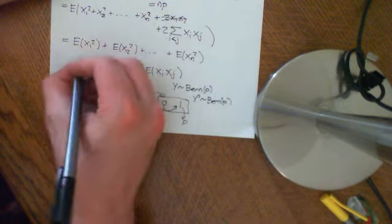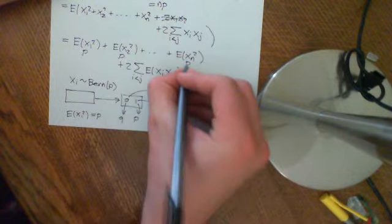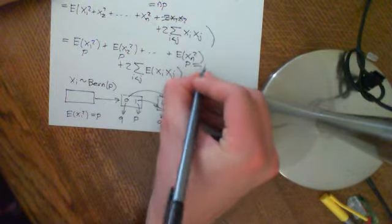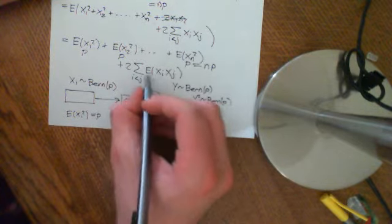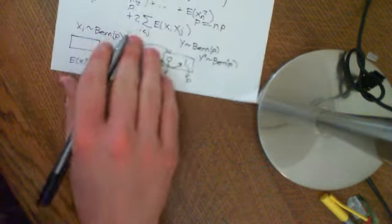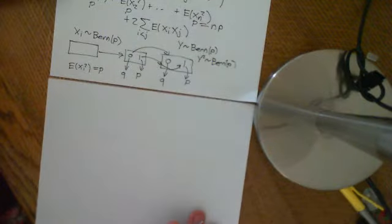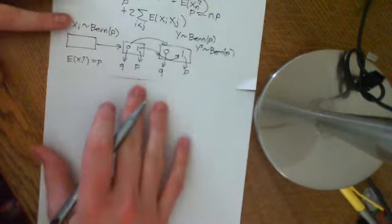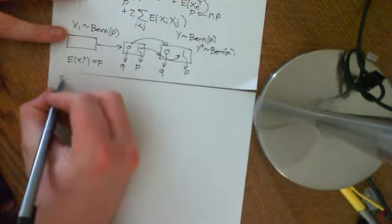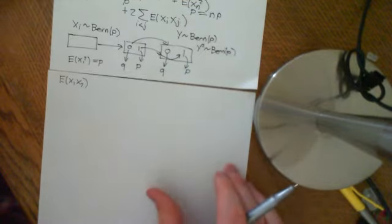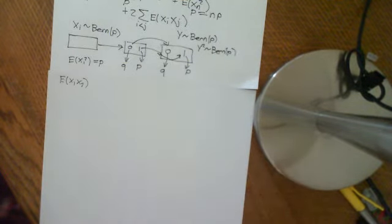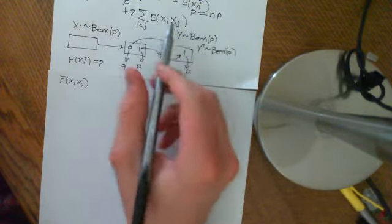So all of those expected values of xi squared are just p, giving us np in total. Now we need to deal with the sum over i less than j of the expected value of xi times xj. By symmetry, all we need to do is evaluate one of these — the expected value of x1·x2 is the same as the expected value of x1·x3, because they're all independent and identically distributed. So we just need to work out one and work out how many of these there are overall.